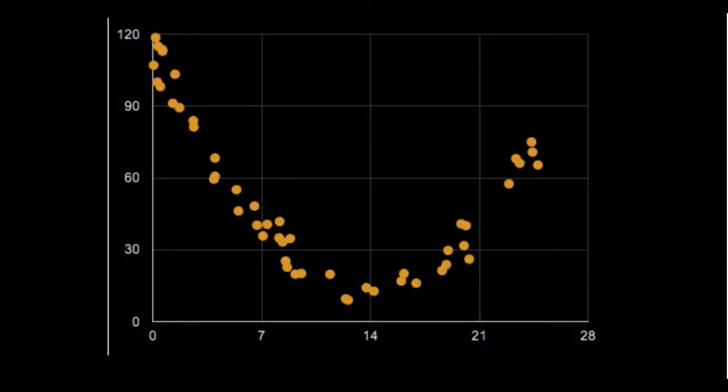Imagine we have a scatterplot like we see in front of us. We probably want to find some type of mathematical function that can model the data presented so we can use that function to make predictions, forecast, interpolation, extrapolation, all that type of jazz. So how do we find such a function?